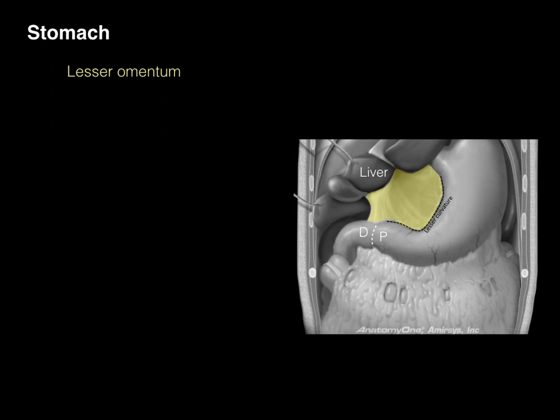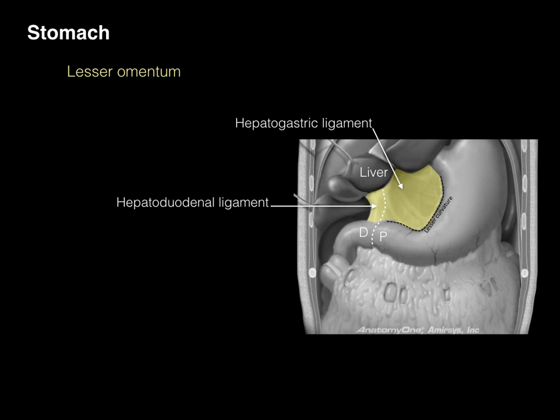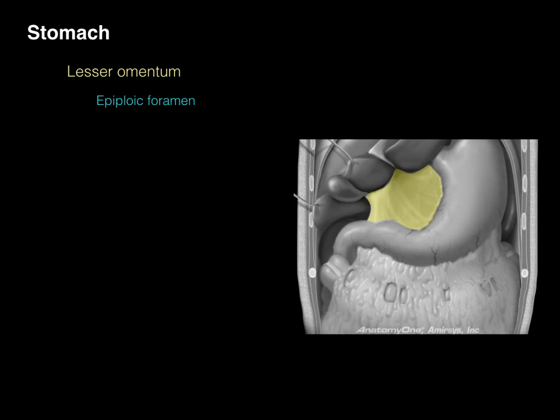Anatomists love to name everything, so that little separation is called the hepatoduodenal ligament, which is a part of the lesser omentum. And then the other part is the hepatogastric ligament — hepato for liver, gastric for stomach. These two different ligaments are aspects of the lesser omentum.